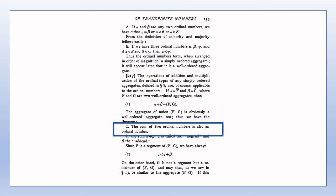Prior to Theorem C of this section being proved, it could be questioned whether the sum of two ordinal numbers is again another ordinal number and not simply an ordinal type. However, Theorem C guarantees that the sum of two ordinal numbers is indeed again an ordinal number. Even without Theorem C, Theorem E of Section 12 would indicate that the union aggregate of two well-ordered aggregates is itself well-ordered, and therefore that the sum of two ordinal numbers is again an ordinal number.